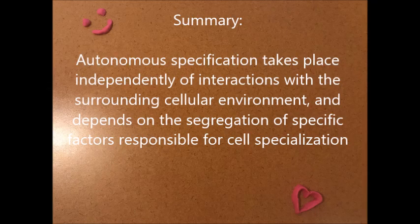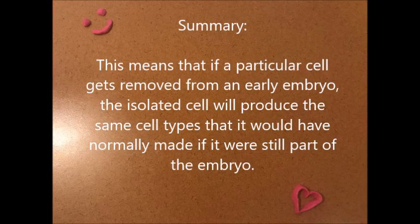Summary: Autonomous specification takes place independently of interactions with the surrounding cellular environment and depends on the segregation of specific factors responsible for cell specialization. This means that if a particular cell gets removed from an early embryo, the isolated cell will produce the same cell types that it would have normally made if it were still part of the embryo.